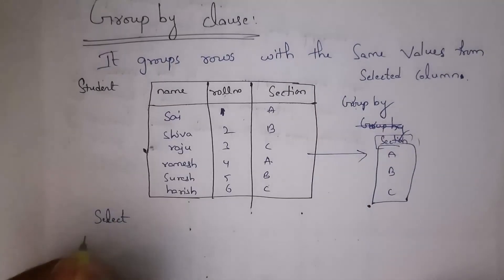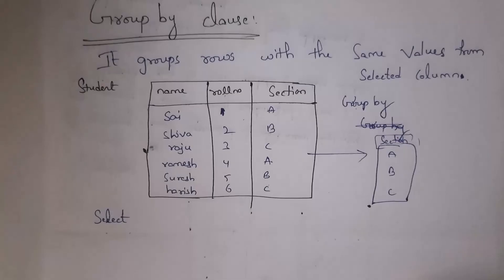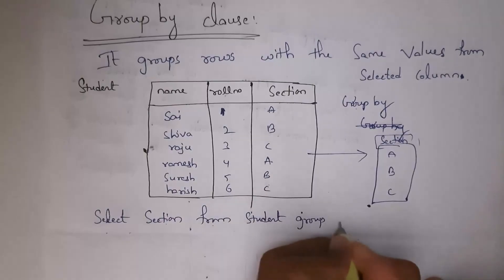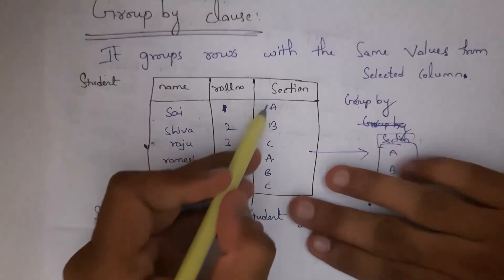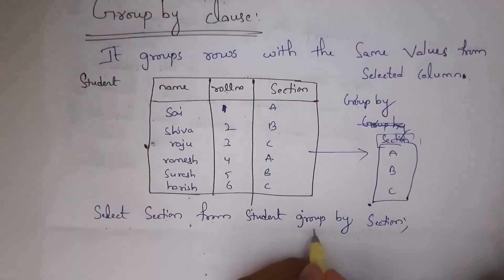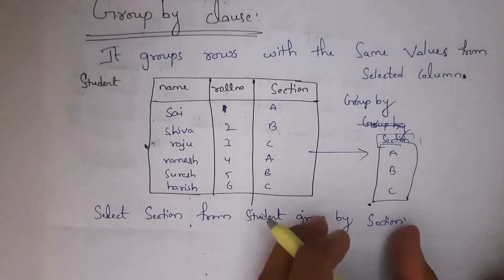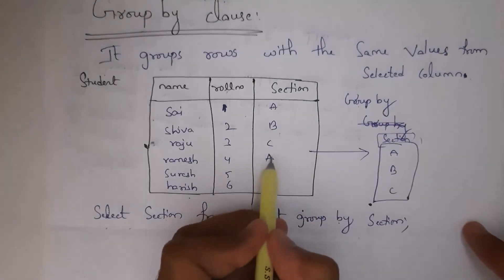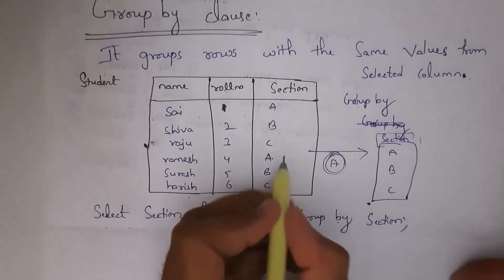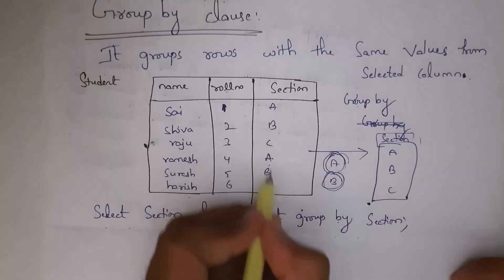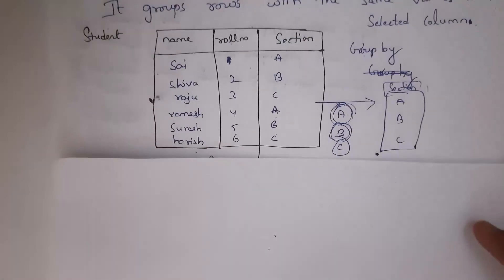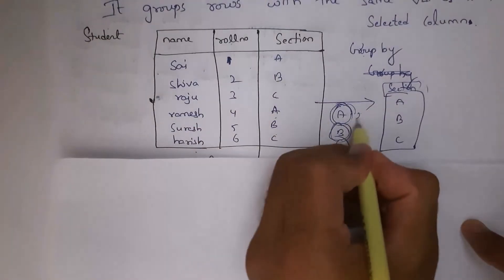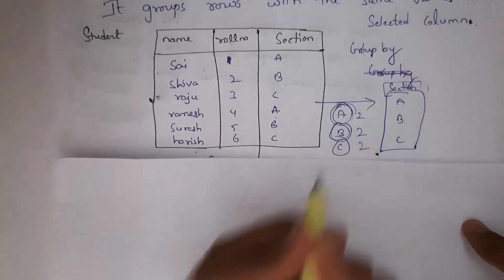To write this query: SELECT section FROM student GROUP BY section. Normally, SELECT section FROM student displays A, B, C, A, B, C. But adding GROUP BY section groups the data — two A's form one group, two B's form one group, two C's form one group — giving three groups total: A, B, C as the output.